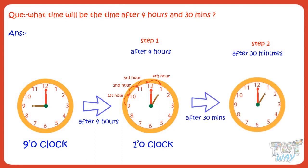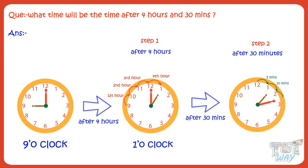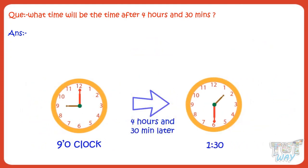Now let's see what will be the time after 30 minutes. The minute hand moves from one number to another in 5 minutes. The minute hand will move from 12 to 1, 1 to 2, 2 to 3, 3 to 4, 4 to 5, and finally 5 to 6. This way, 30 minutes will pass, and the minute hand will reach 6. The time will be 1:30. So it will be 1:30 after 4 hours and 30 minutes.